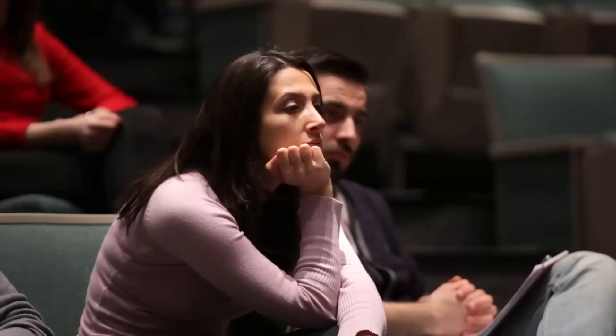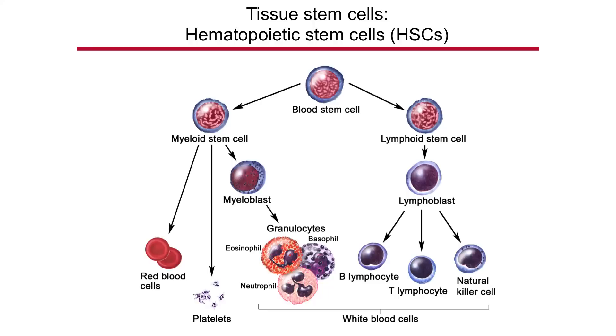Another example is our blood system, which is composed of many different cell types — white blood cells, red blood cells, immune cells — but they all derive from a single hematopoietic stem cell located in your bone marrow. If you lose hematopoietic stem cells, you get anemia and die. These tissue stem cells are found in each different organ and serve to replace and replenish the cells of that particular organ system.